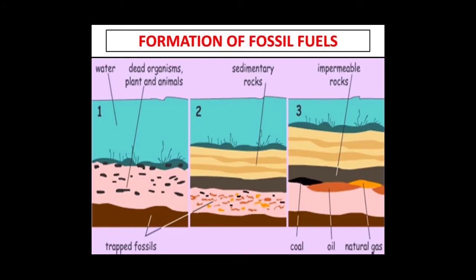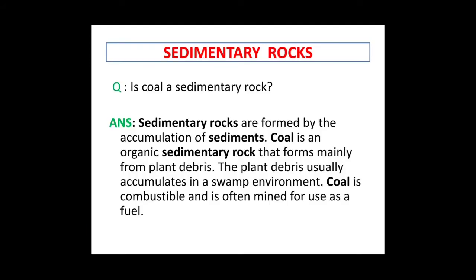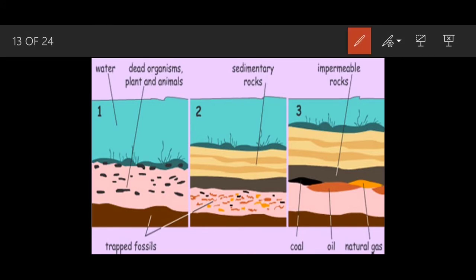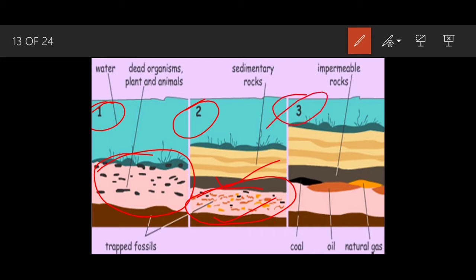These fossils get trapped and squeezed, and in the third stage they undergo chemical changes and turn into valuable resources: coal, oil, and natural gas. These are the fossil fuels — we drill and take out petroleum and natural gas and use them in industries.